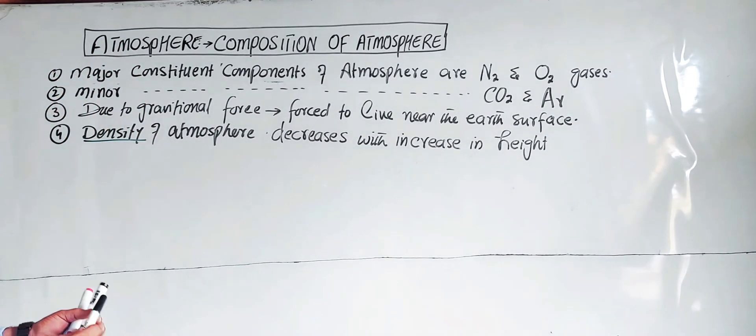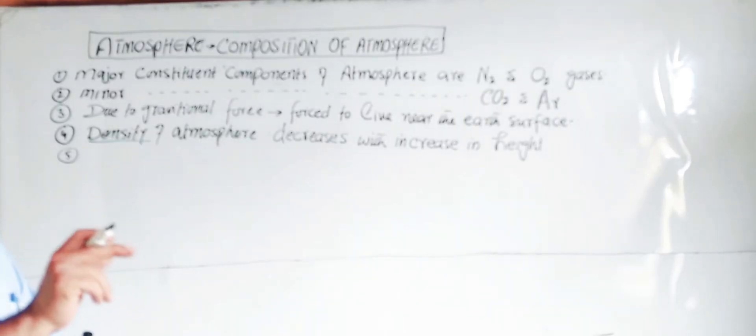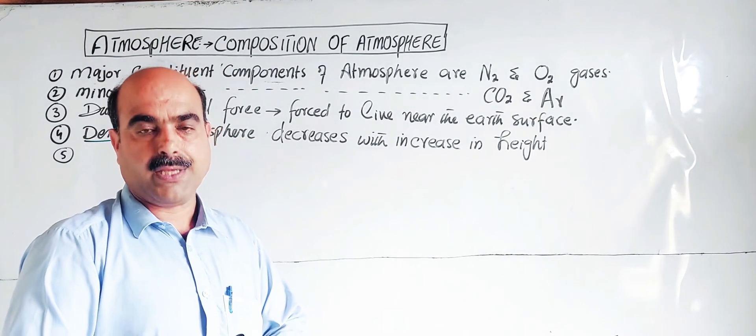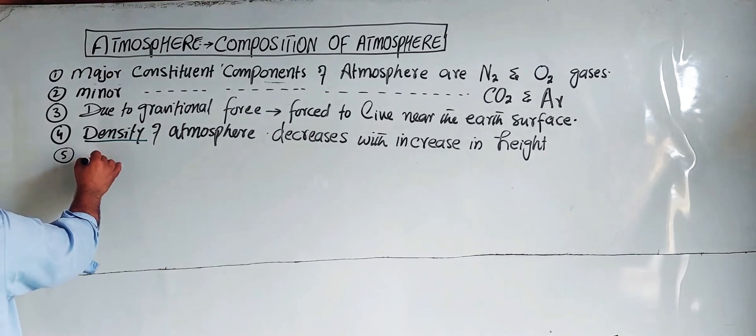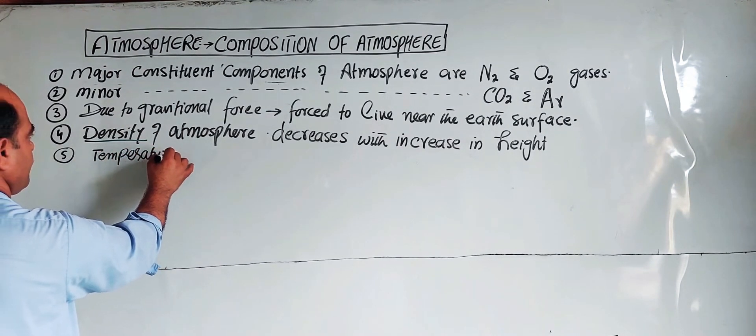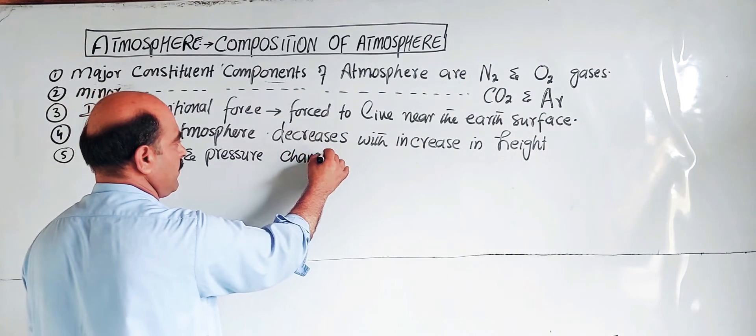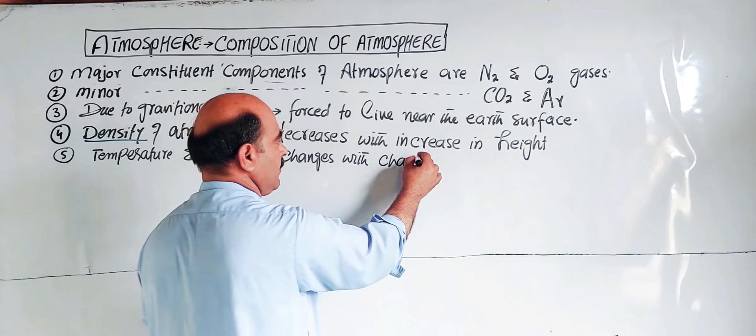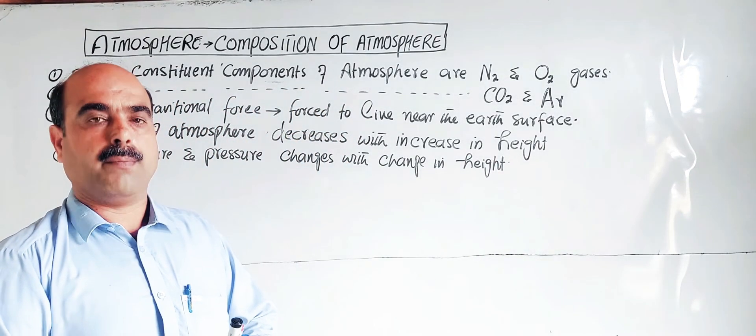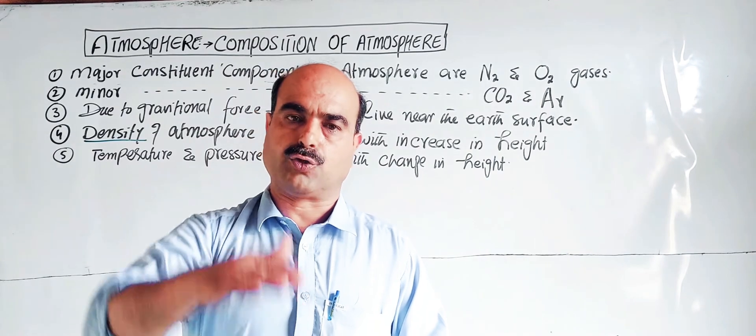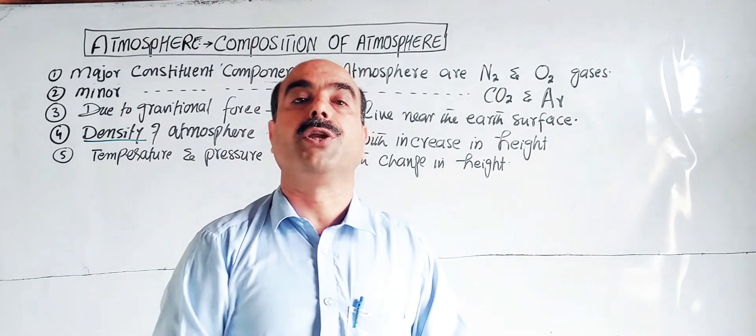Temperature and pressure in the atmosphere also change with change in height. Gases exert pressure by colliding with materials. Temperature and pressure change with height, but pressure changes regularly. Atmospheric pressure decreases with increase in height, but temperature doesn't decrease or increase regularly.